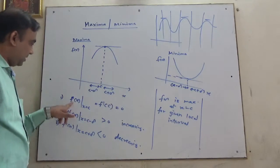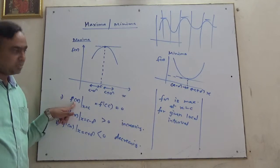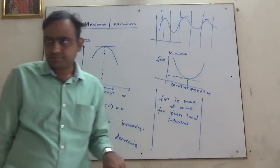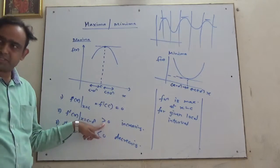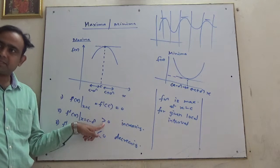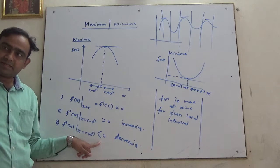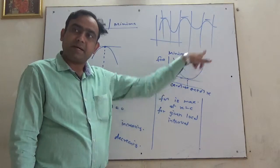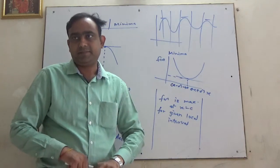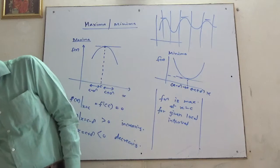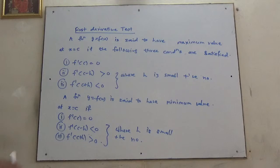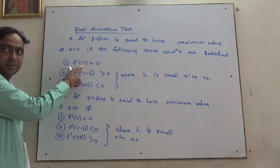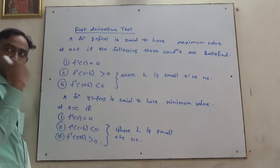Understand? This way we can determine whether in a local interval the function has minima or maxima. For that, first, at that point the derivative should be zero. Zero should come. For minima also zero should come. For maxima, before it should be increasing and after decreasing. For minima, decreasing then increasing.